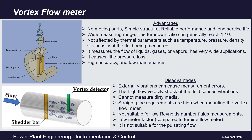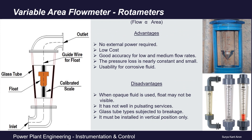The next category is variable area flow meters, which are basically rotameters. Rotameters are used to measure liquid or gas volumetric flow rate as it passes through a tapered tube. Fluid enters through the bottom inlet, exerting pressure on the float, causing it to rise. As the float rises, the cross-sectional area of the tapered tube increases, and since flow is directly proportional to area, the float position is calibrated to give flow indication.